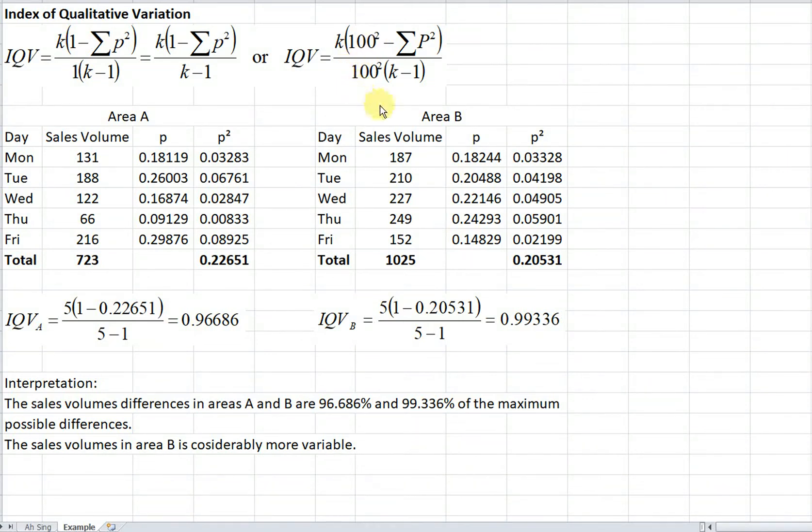So let's try the proportion method. Both of them actually will get the same result. We just try proportion. So let's say we have sales volume of the same product at different areas. The sales volume is recorded over 5 days here in different areas.